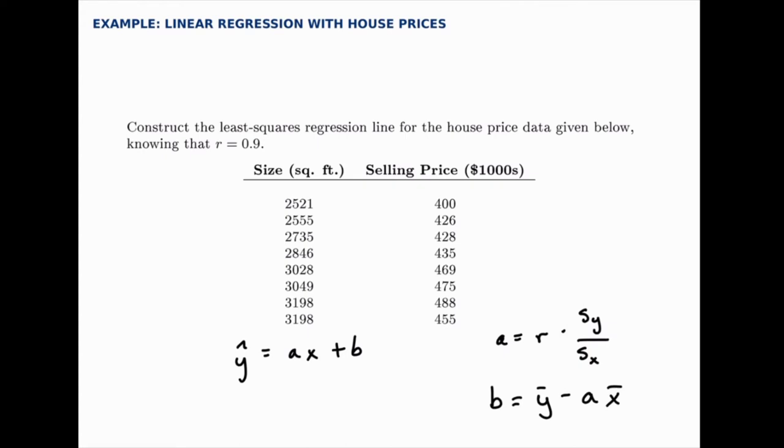We need to calculate the average and the standard deviation for the x's and the y's. In this case, x is the size and y is the selling price for this house data, because it makes more sense to say that the size of the house determines the selling price. In other words, the price depends on the size rather than the other way around.